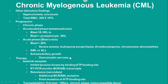Imatinib mesylate is the first-line treatment for CML. It is a synthetic compound that inhibits tyrosine kinase by binding the ATP binding site. The therapy can be monitored using RT-PCR to measure BCR-ABL transcripts. Imatinib is a good drug, yet resistance has developed via additional BCR-ABL mutations which double the tyrosine kinase activity. This can be overcome by increasing the dosage of imatinib.